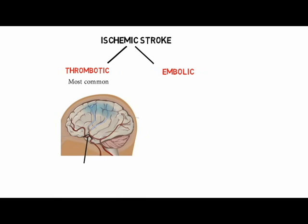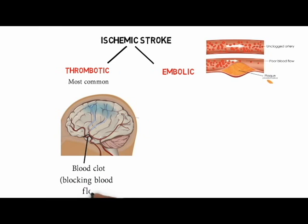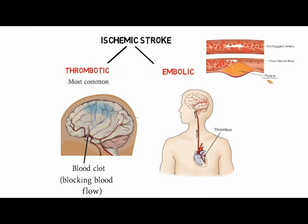In thrombotic stroke, a blood clot forms inside a diseased or damaged artery in the brain, resulting from atherosclerosis — that is, cholesterol-containing deposits called plaque — which block the blood flow. The other type is embolic stroke, which is caused when a clot or small piece of plaque formed inside one of the arteries leading to the brain, or in the heart, is pushed through the bloodstream.